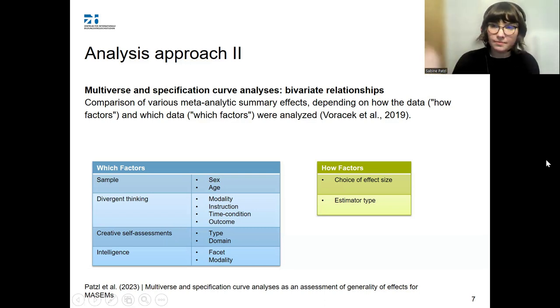You're also looking at how factors, which basically tell you how the data is meta-analyzed. You're combining these with the different how factors, and these lead to a lot of different specifications, for all of which we are computing meta-analytical summary effects. At the end, we're basically comparing all these possible meta-analytical summary effects. We get a mean over these summary effects, and it tells us how robust a correlation is.